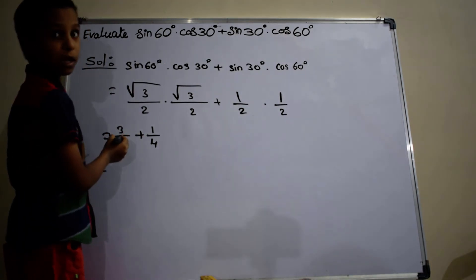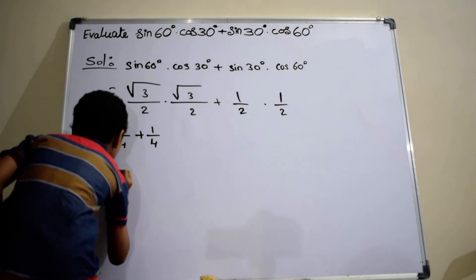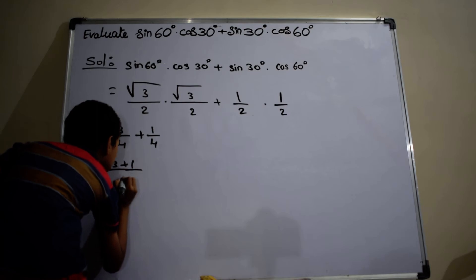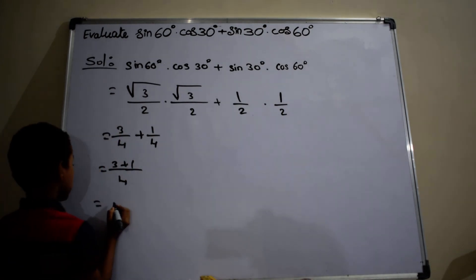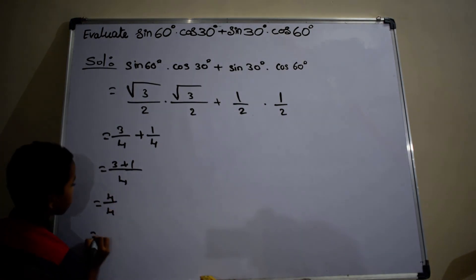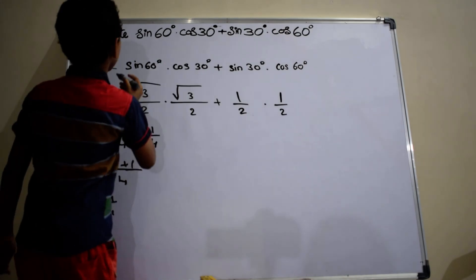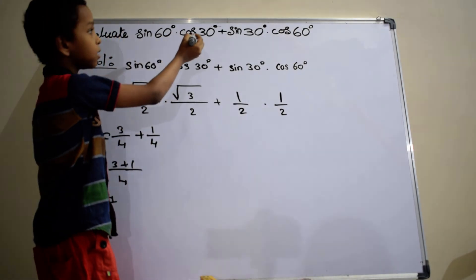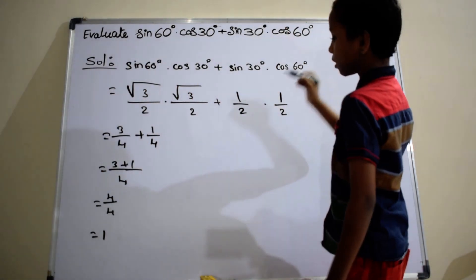The denominators are the same, so LCM equals to 4, which is equal to 3 plus 1 by 4. This gives 3 plus 1 equals to 4, which is equal to 4 by 4 equals to 1. Therefore, sin 60 degrees into cos 30 degrees plus sin 30 degrees into cos 60 degrees equals to 1.